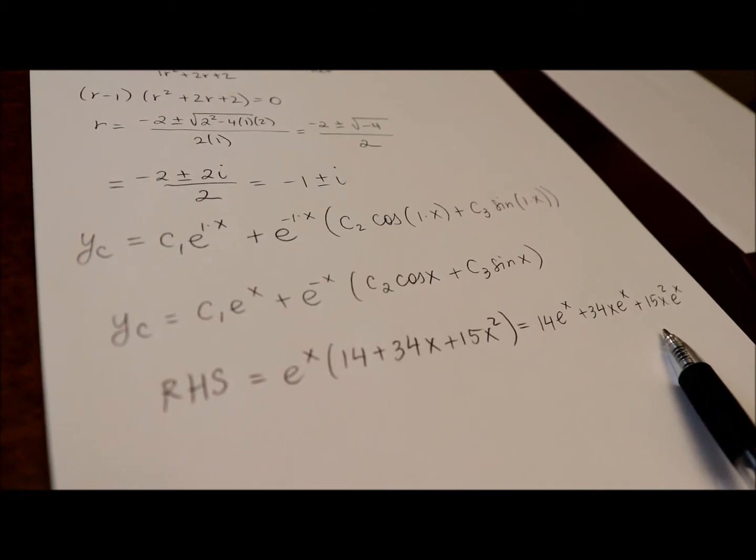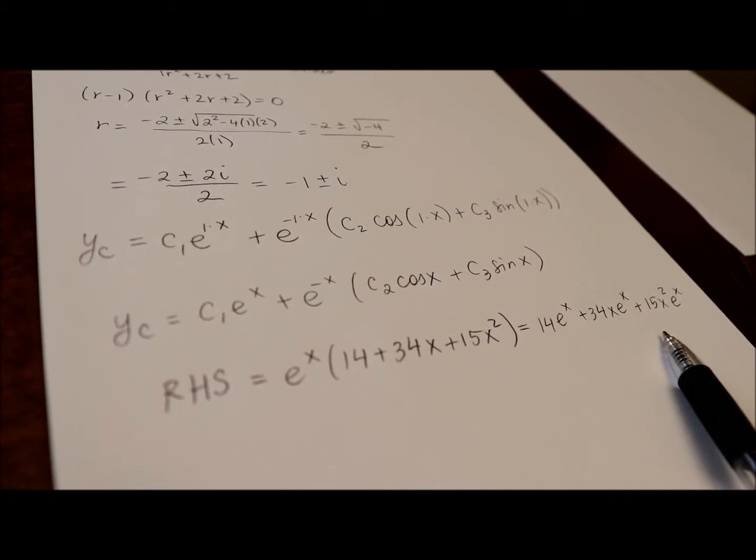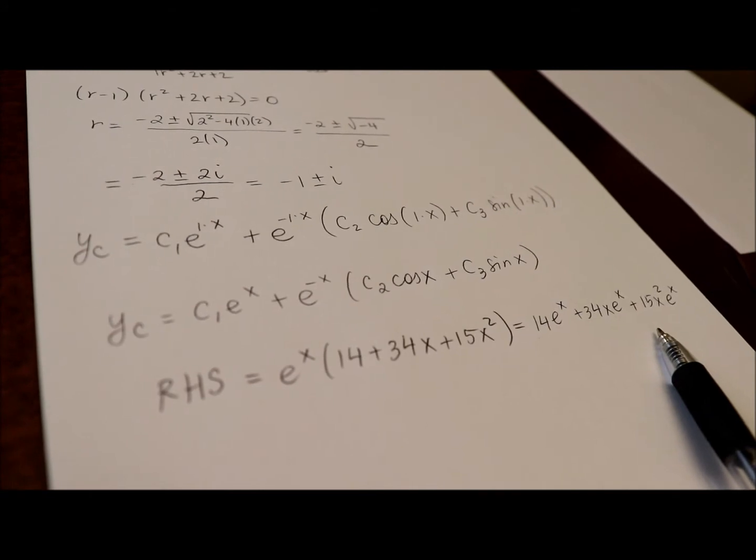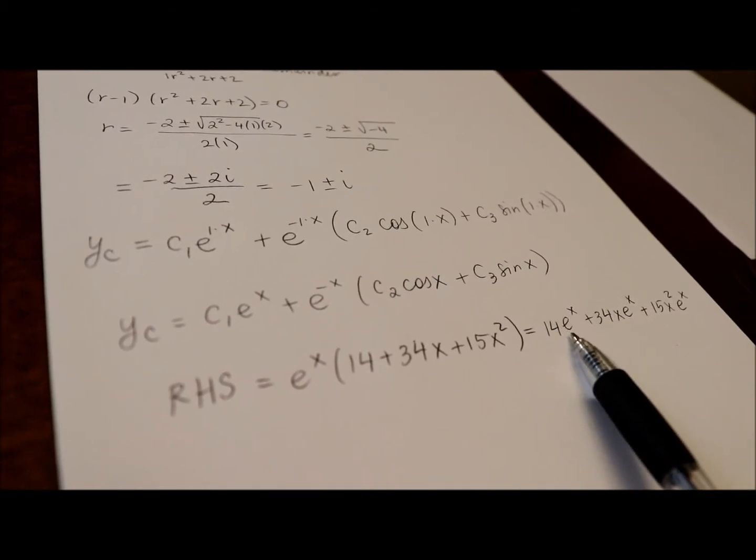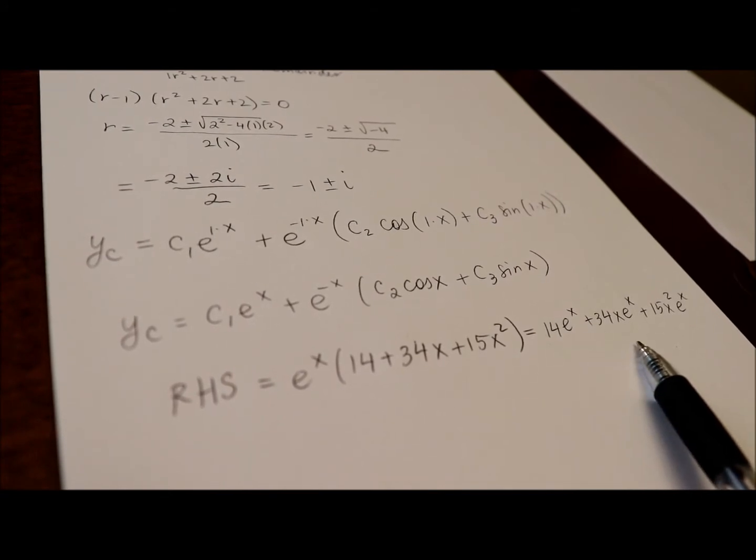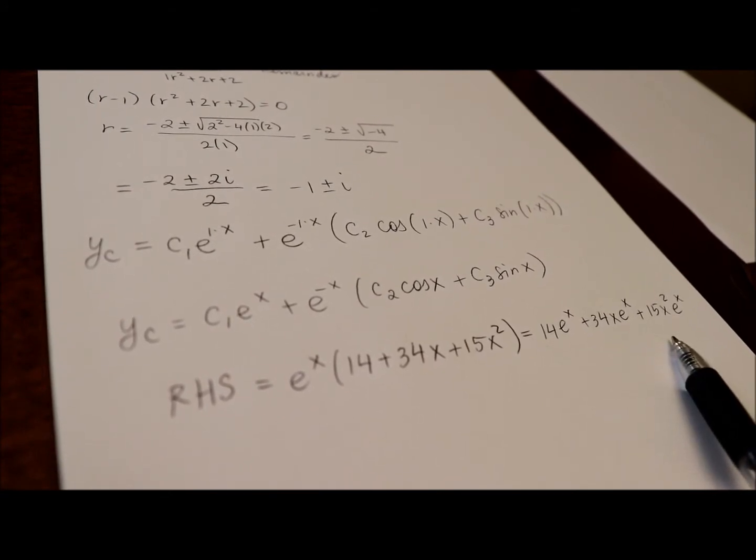and if you will think about the derivatives, in particular up to the third order derivative, since our equation was order 3, it will also consist of terms that are constant multiples of e to the x, x, e to the x, and x squared e to the x.